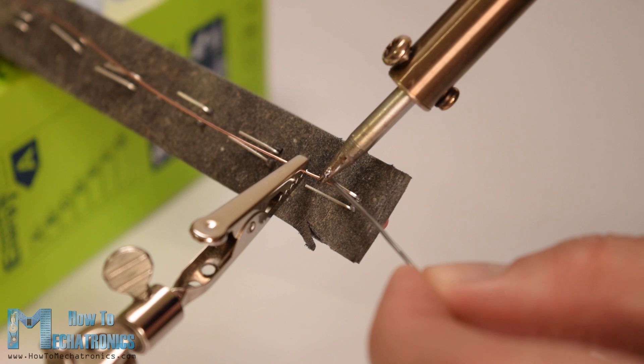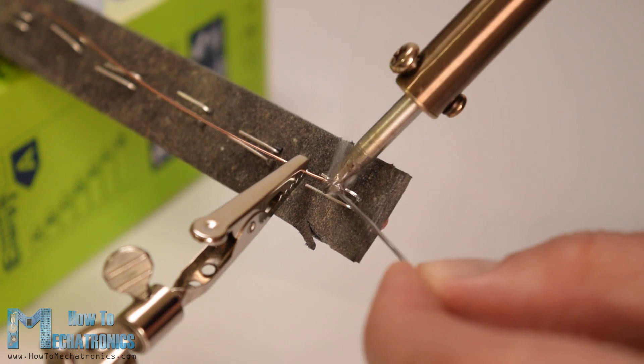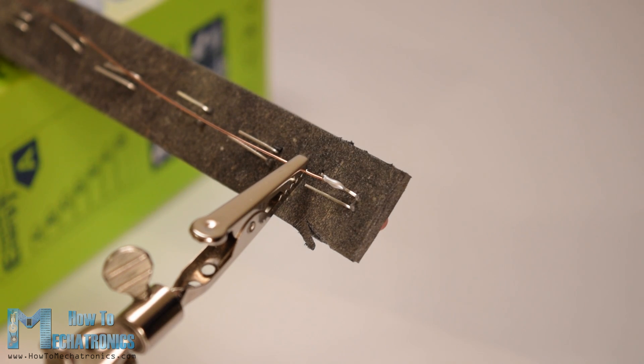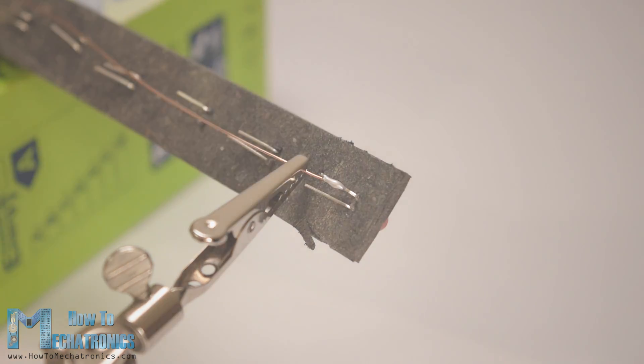After inserting all LEDs we need to solder all negative leads together and solder a separate wire to each positive lead.